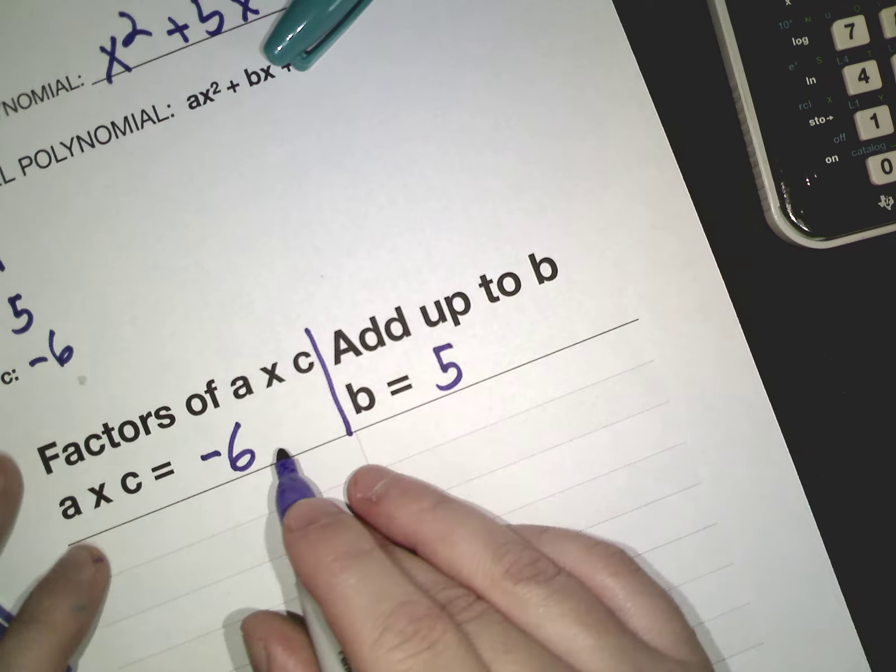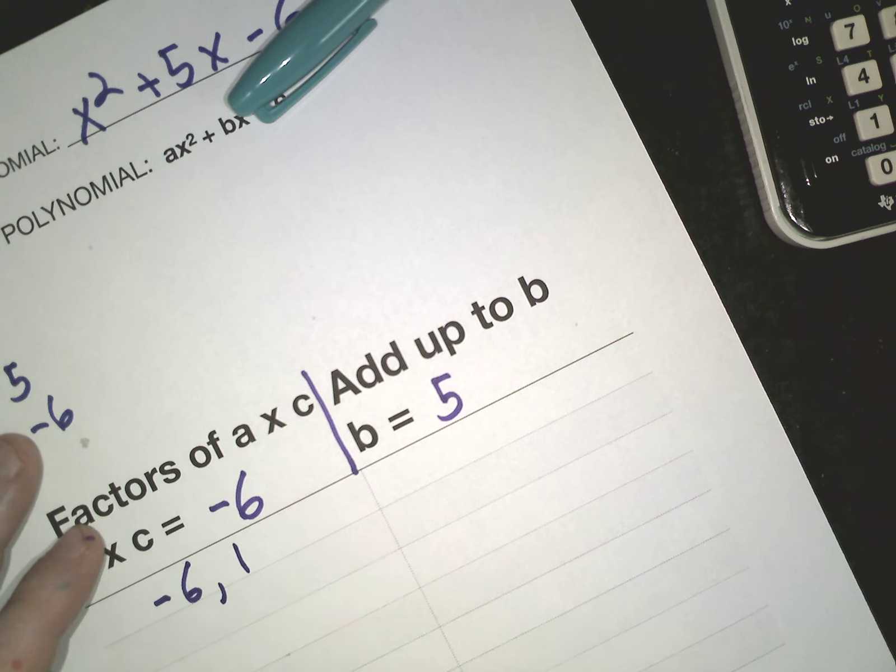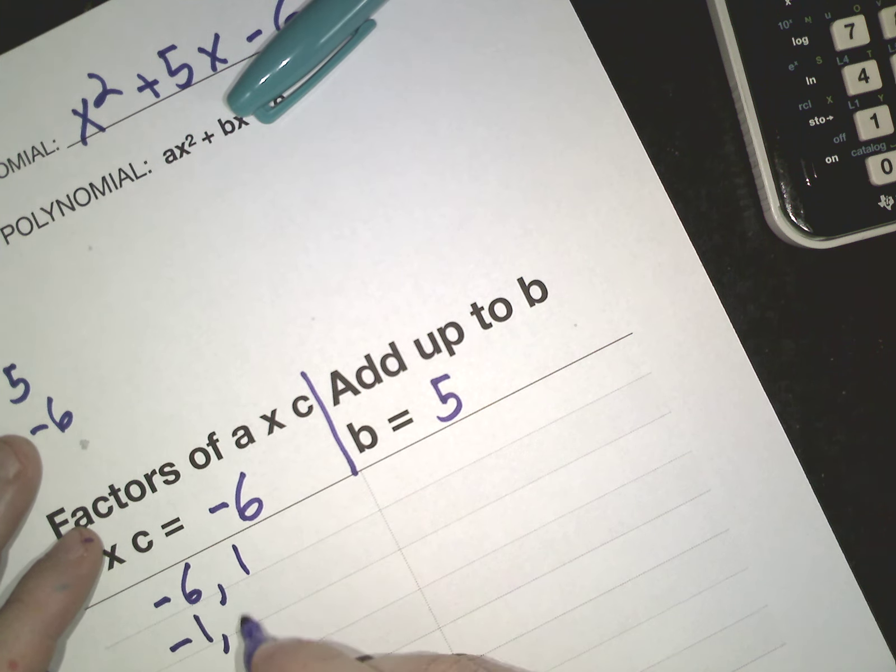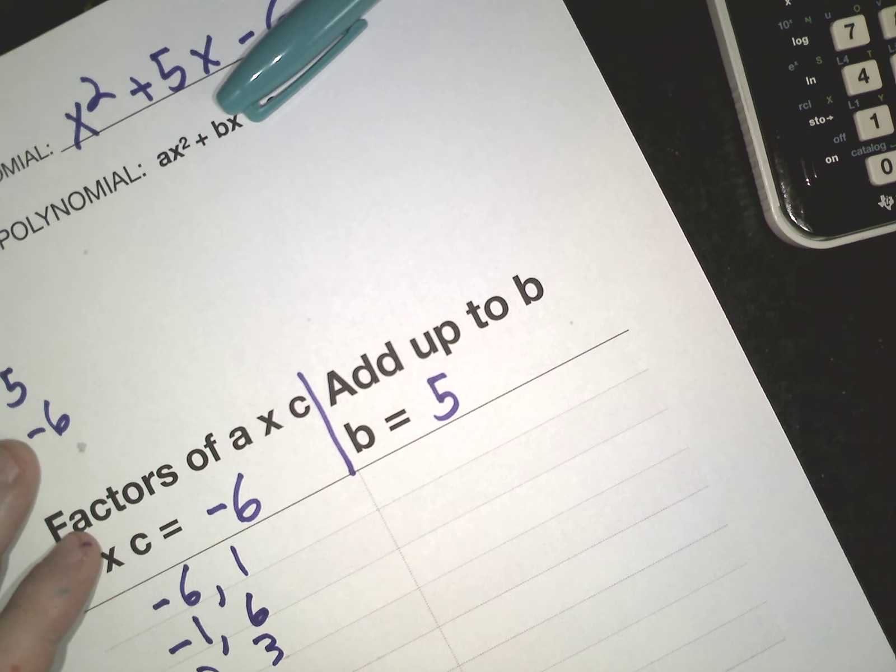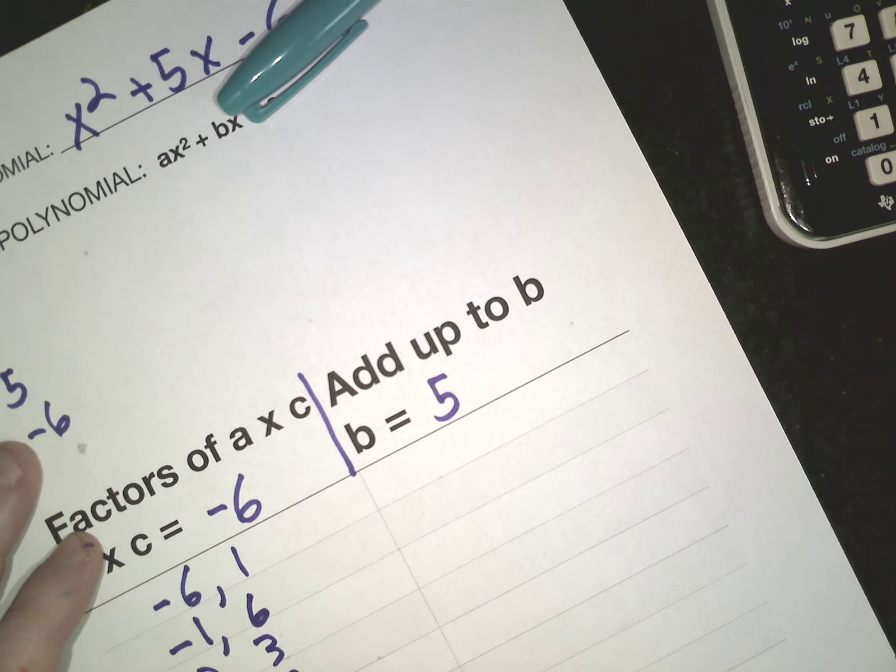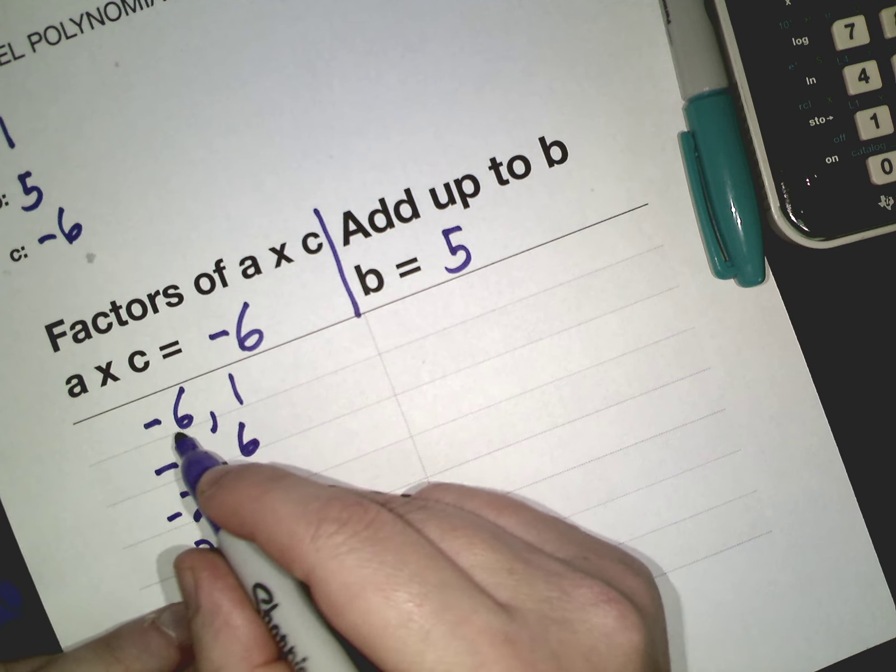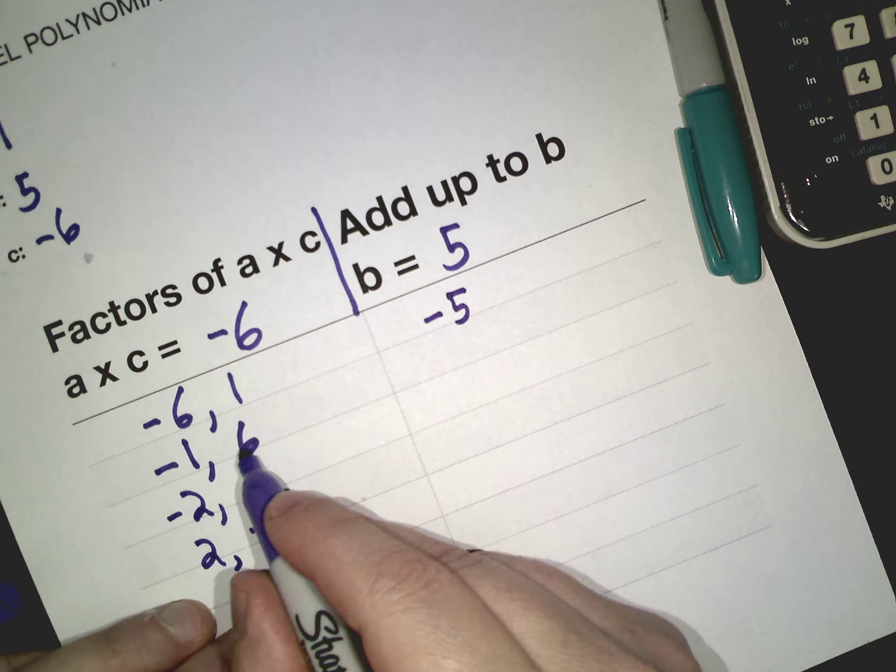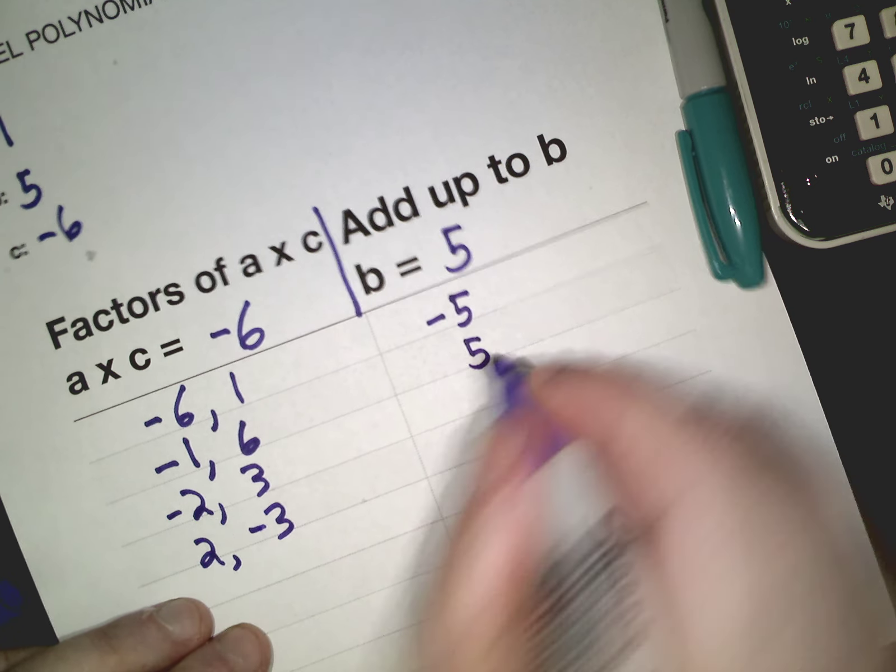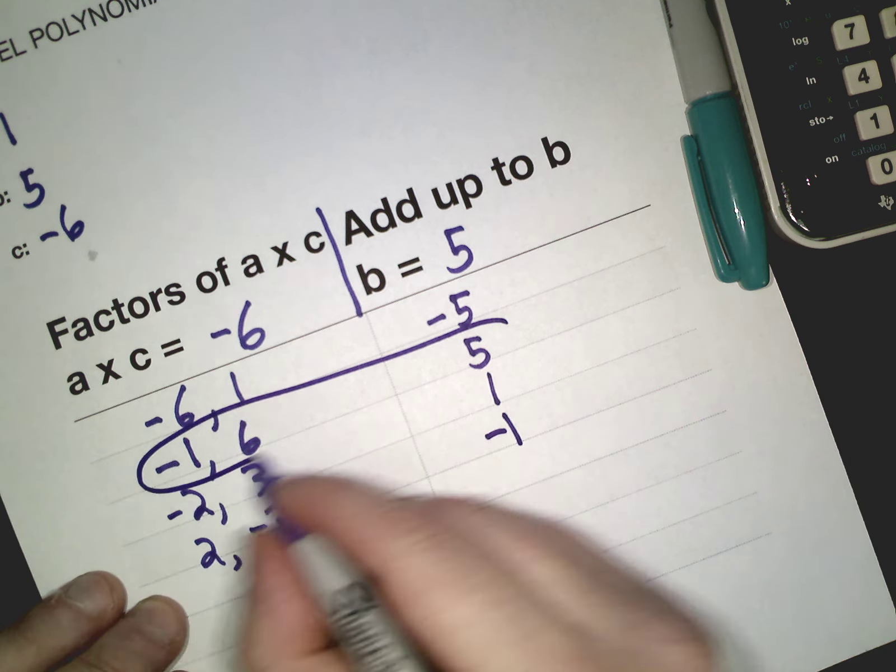And they have to multiply to negative 6. Well how can we get negative 6? Well I could do negative 6 and 1, I could do negative 1 and 6, I could do negative 2 and 3, I could do 2 and negative 3. Is there any more I can think of? Okay so what happens is I start adding them up. Negative 6 plus 1 is negative 5, I need positive 5. Negative 1 plus 6, there's our answer. I'll check the other ones just to be sure. That adds up to 1, that adds up to negative 1, so our only one that's possibly the answer is right there.